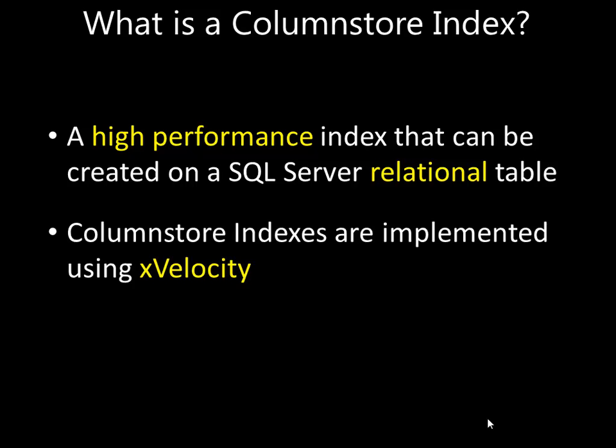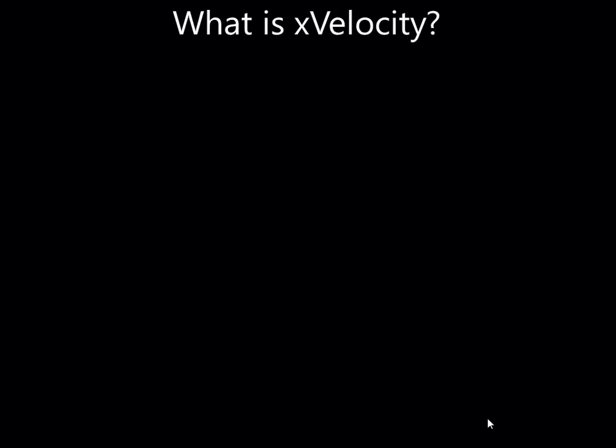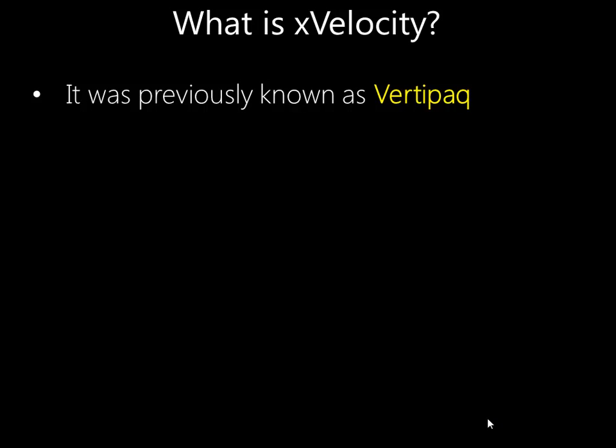Column store indexes are implemented using a technology called X-Velocity. This might not be familiar to you, but it is a new name for something you may be familiar with before. It used to be called VertiPack, and it's just a branding change to X-Velocity.